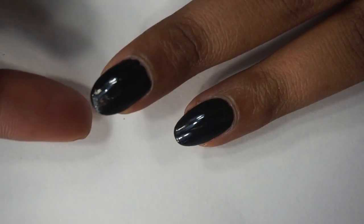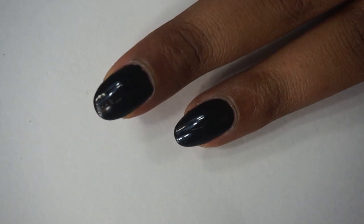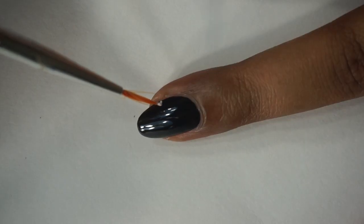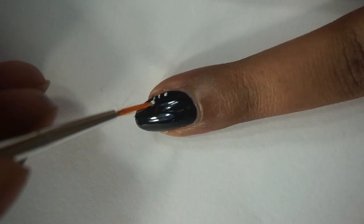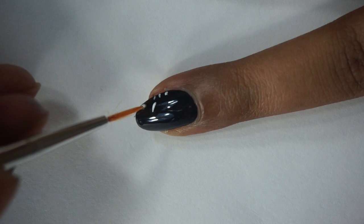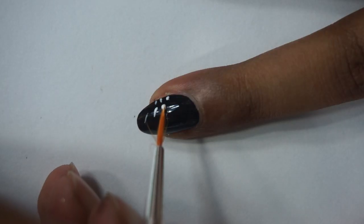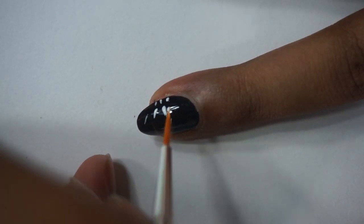Apply black polish on both fingers and allow it to dry completely. Using the detail brush, I'm adding dashes of different lengths in white. The other trick is to also space the dashes of the next row more apart from each other.